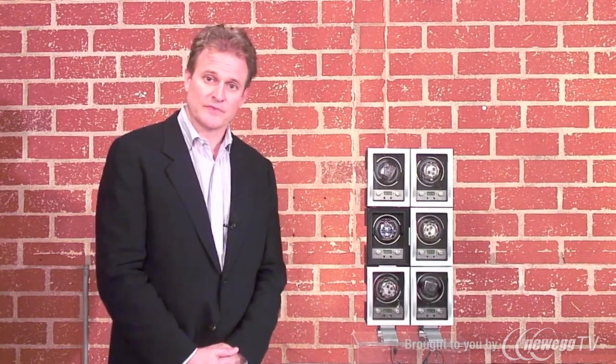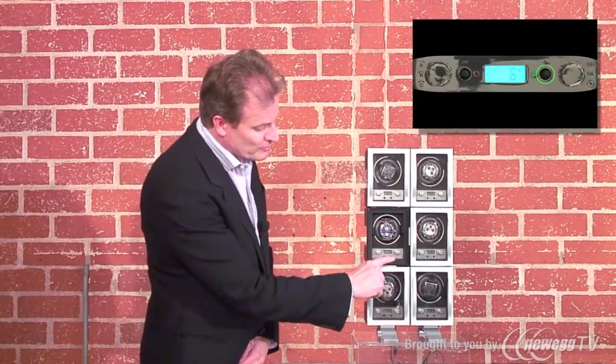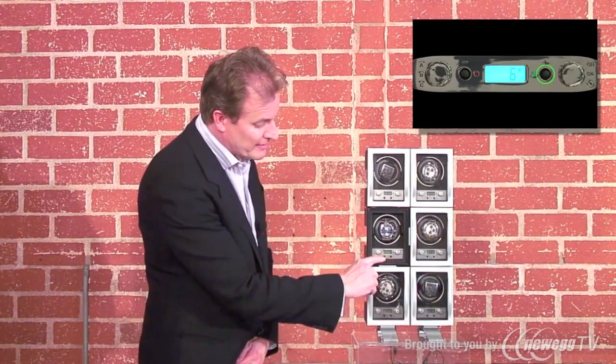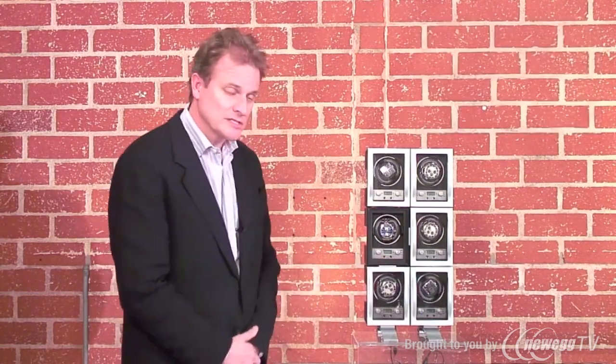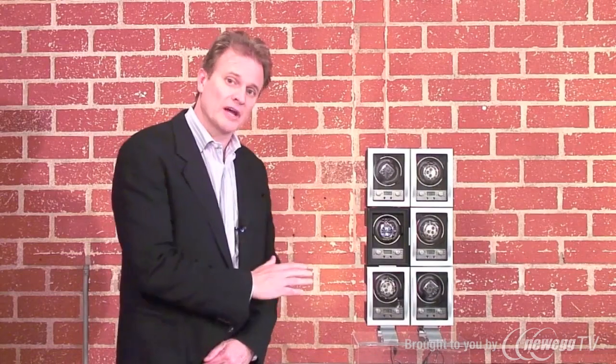Now that your watch winder is turned on, you'll want to select how many turns per day the watch rotates. We recommend you contact the watch brand to determine how many turns per day your watch should rotate. Turns per day is controlled by the little button here to the right and to the left of the LCD readout. The button on the right increases turns per day, and the one on the left decreases turns per day in increments of 50. And we actually start at 300 turns per day and go all the way up to 1,200 turns per day.